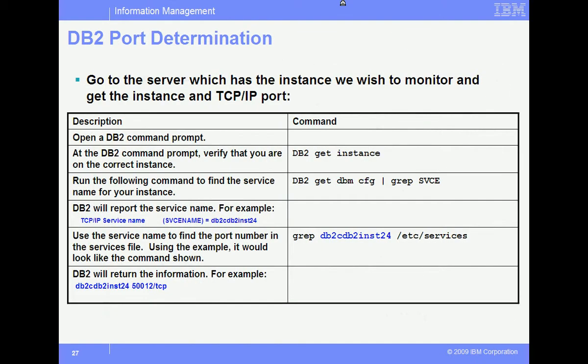Follow these steps to get port information. First, log on to the monitored server with DB2 instance owner and password. Then, issue a DB2 get instance command to verify the instance name. Next, issue a DB2 get DBM config and pipe it to a grep on service or SVCE. You should get a single line showing the service name. Finally, issue a grep on the service name in the etc/services directory. You will get the port number for TCP IP connectivity.